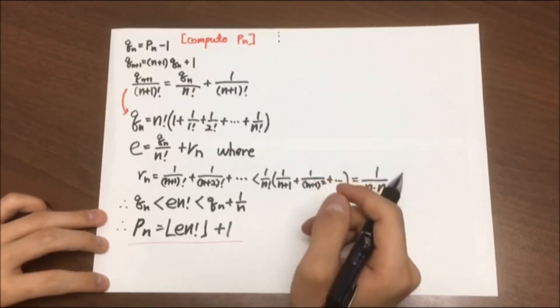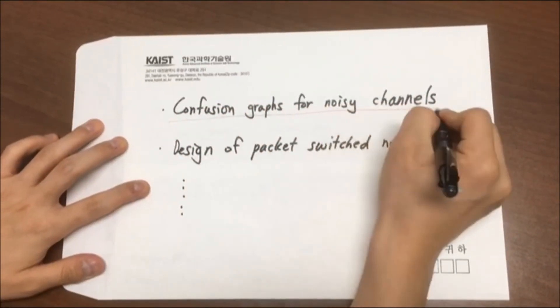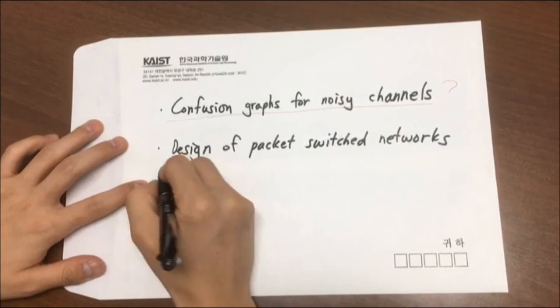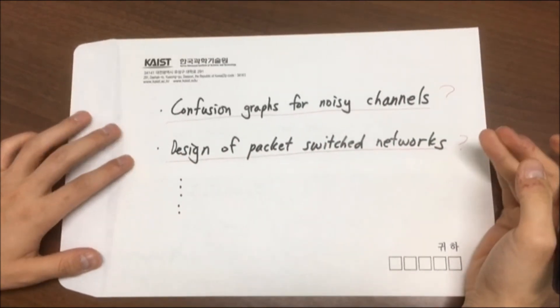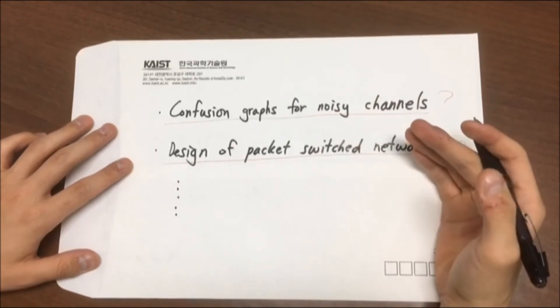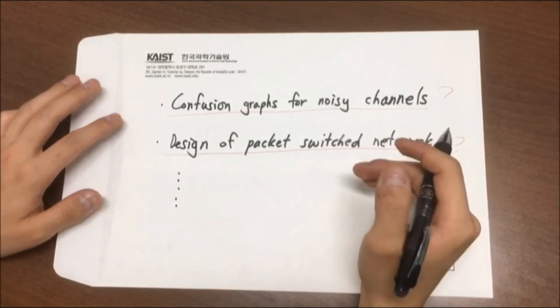Ramsey's number is used in many fields. Examples including confusion graphs for noisy channels, design of packet switch networks, etc. But as these are out of bounds of our knowledge, let me show you some instances of Ramsey's number with two classes.